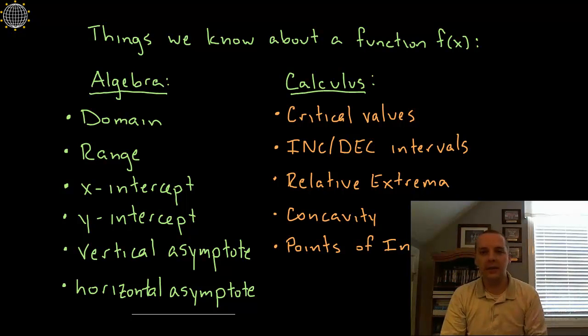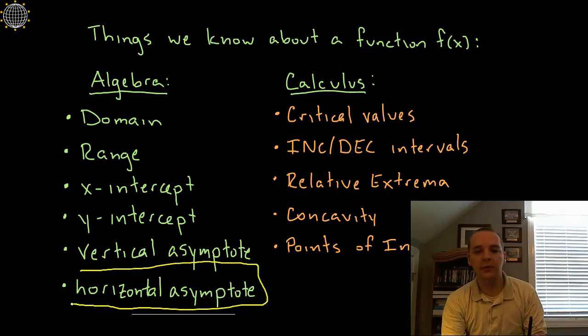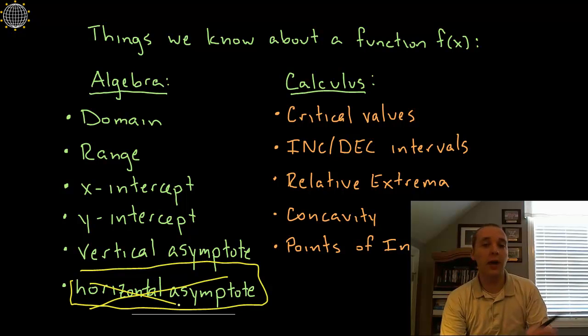Now last thing I'll say that I'll warn you about is you actually don't have to have every one of these. Not every function on earth has a horizontal asymptote for example. So if it doesn't have one there's nothing you can do, you would just ignore that one. But if it does have a horizontal asymptote well then great, well then you would apply that.